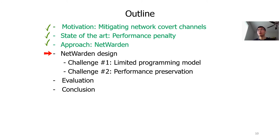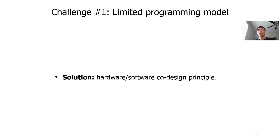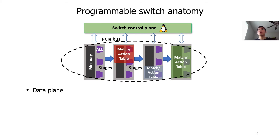I have talked about our motivation, the limitation of existing approaches, and given you a high-level picture of our approach. Next, I will talk about Netwarden's design in detail. It is not easy to build a covert channel defense in a programmable switch, because programmable switches are originally designed for traffic forwarding and have a very limited programming model. To solve this problem, we propose a hardware-software co-design principle. A programmable switch has two layers: the data plane and the control plane.